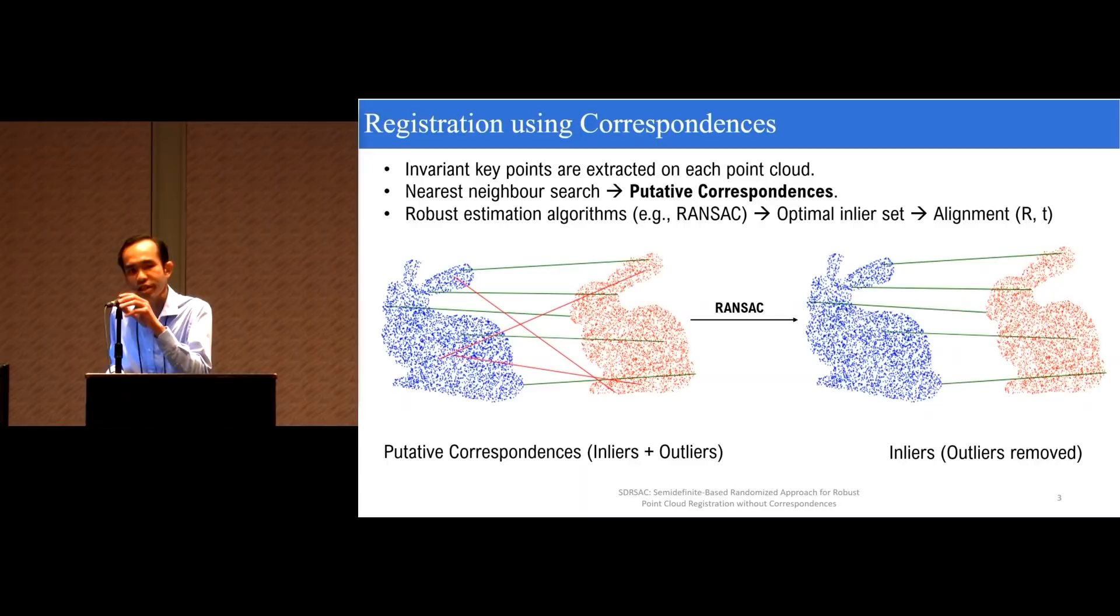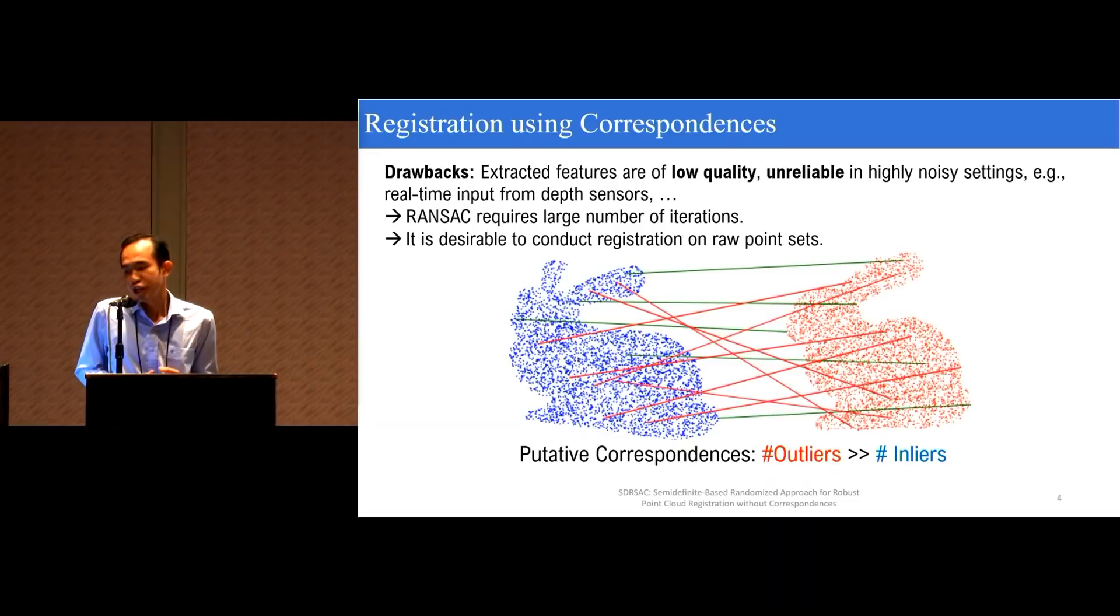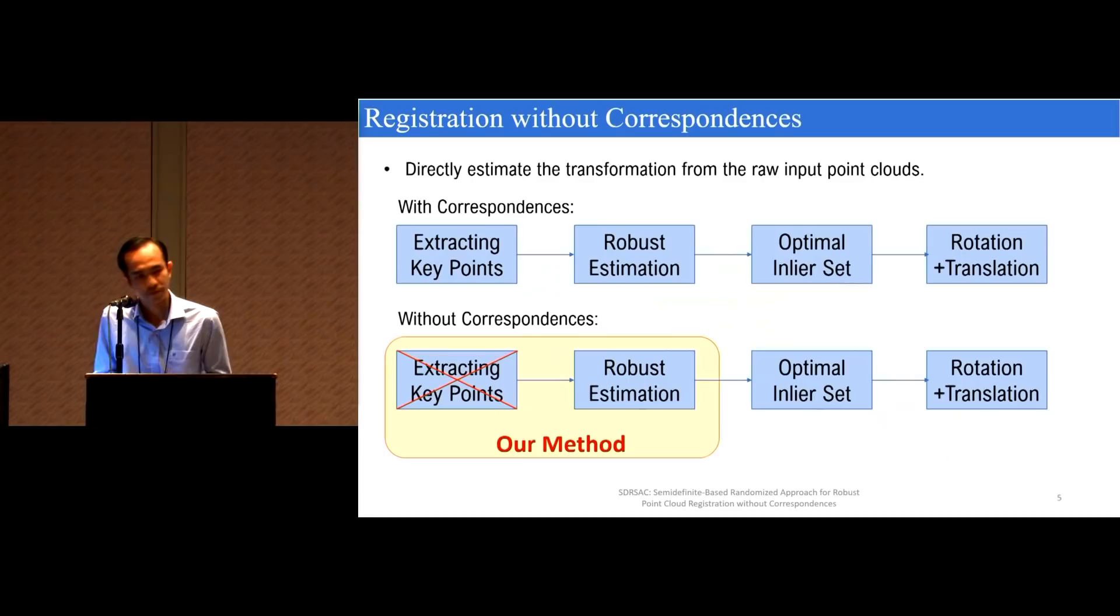Practically, this problem is tackled using correspondences whereby we first extract the invariant key points on each point cloud, and then we search for the set of putative correspondences. And finally, we run a robust estimation algorithm such as RANSAC to obtain the set of optimal inliers as well as the final alignment. However, there are some problems with these approaches. For example, the extracted features may become low-quality or unreliable in very highly noisy settings. Therefore, algorithms such as RANSAC may require a large number of iterations to provide satisfactory solutions.